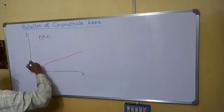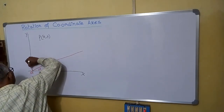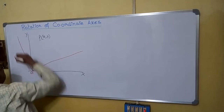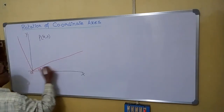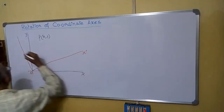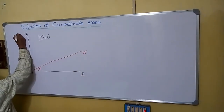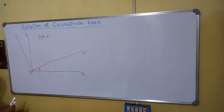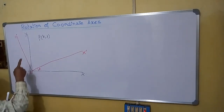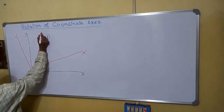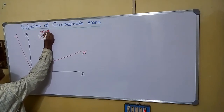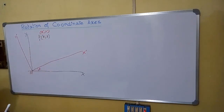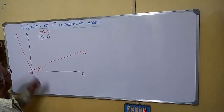So if the x-axis is rotating by theta, the y-axis will also rotate through an angle theta. So the angle between x-axis and y-axis will remain 90 degrees. In this situation, let us assume the new coordinates become x-dash and y-dash. Now we will establish a relation between x-dash, y-dash and x, y.